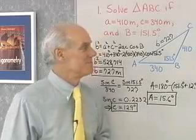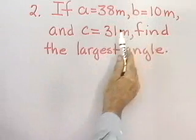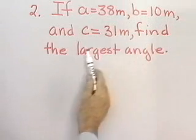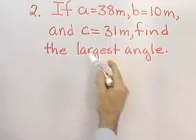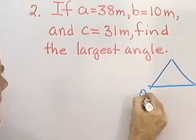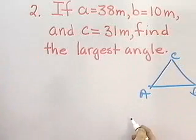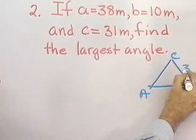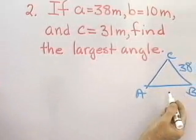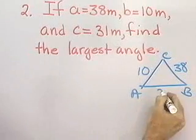Let's go to our next problem. If A is 38 meters, B is 10 meters, and C is 31 meters, let's find the largest angle. Let's draw a little picture right here just to help us out. We have A, B, and C. For my angles, I'll label side A with 38, I'll label side B with 10, and I'll label side C with 31.